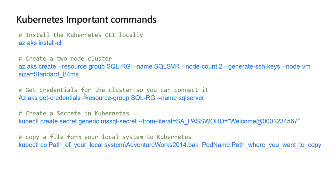The third command is for getting the credentials for the cluster so that you can connect to it. For that we have the az aks get-credentials command, which gets the credential for the cluster you have already created. The fourth command is for creating a secret. If you are using a password or any secret information while you create your cluster, you have to always keep this in Kubernetes secrets so that it is not exposed for security purposes. This command creates a secret using kubectl create secret, specifying the secret name and the secret variable and its value.